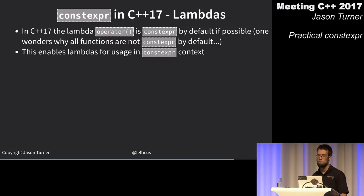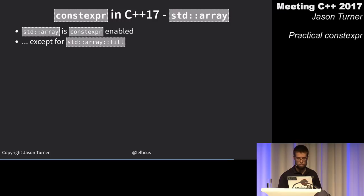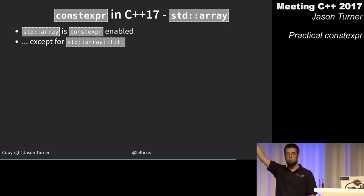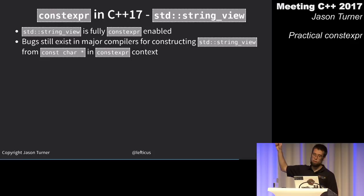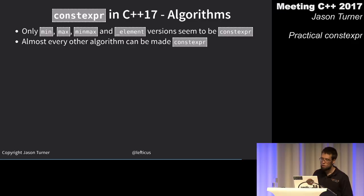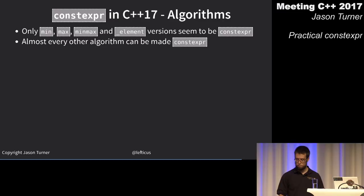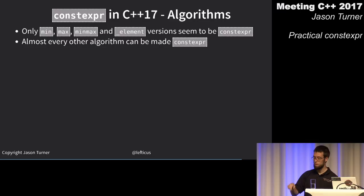std::array is constexpr enabled in C++17 except for the fill method — no idea why not. Of the standard algorithms, only min, max, min_element, max_element, and minmax_element are constexpr. Those are the only ones — even though we've proven most of them can be made constexpr.